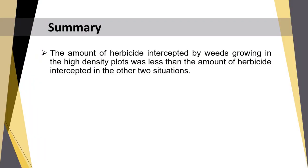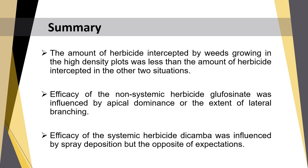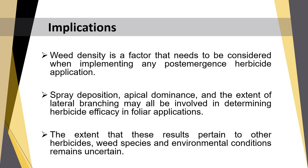In summary, the amount of herbicide intercepted by weeds growing in high density plots was less than the amount intercepted in the other two situations. Efficacy of the non-systemic herbicide glufosinate was influenced by apical dominance and the extent of lateral branching. Efficacy of the systemic herbicide dicamba was influenced by spray deposition, but in the opposite direction of expectations. This research suggests that weed density is a factor that needs to be considered when implementing any post-emergence herbicide application. Spray deposition, apical dominance, and extent of lateral branching may all be involved in determining herbicide efficacy in foliar applications. The extent to which these results pertain to other herbicides, species, and environmental conditions remains uncertain.